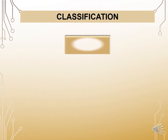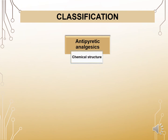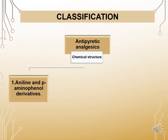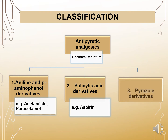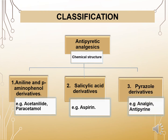Classification of antipyretic analgesics is based on chemical structure. First class: aniline and para-aminophenol derivatives — for example, acetanilide and paracetamol. Second class: salicylic acid derivatives — for example, aspirin. Third class: pyrazolone derivatives — for example, analgin and antipyrine. This is the classification of antipyretic analgesics.